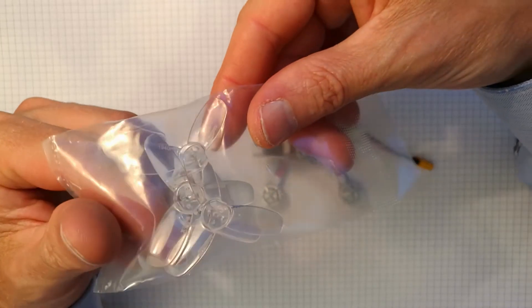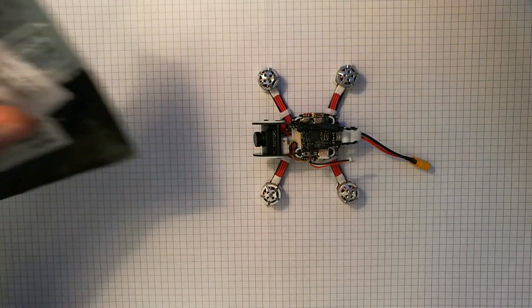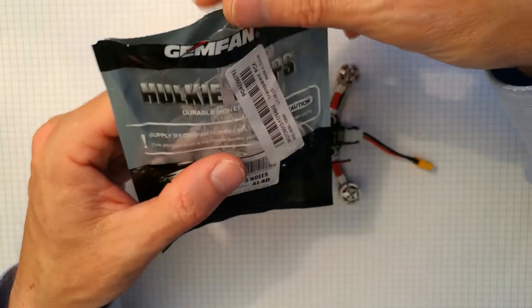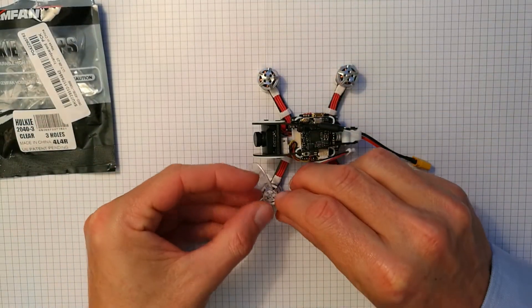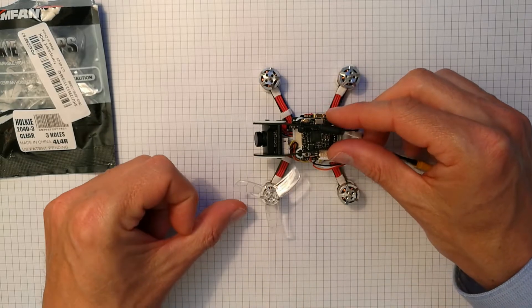which is sort of surprisingly small. I ordered these Jamfam Houtis 2040 three-bladed, which fit perfectly well and are probably the best way to go. So there's enough clearance all the way through.